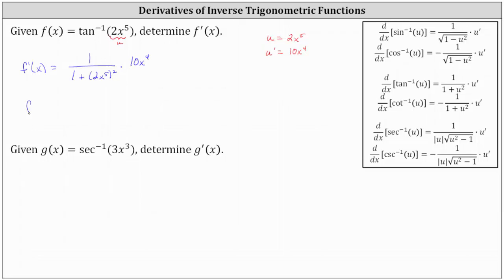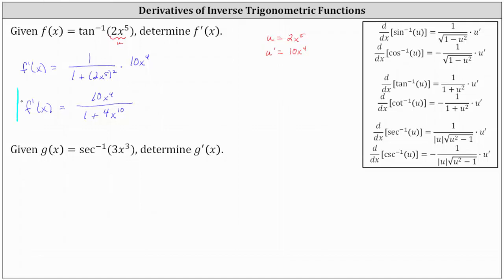Simplifying, we have f prime of x equals 10x to the fourth divided by the quantity one plus the square of 2x to the fifth, which is 4x to the tenth. Now we need to be careful here — we cannot simplify the 10x to the fourth and 4x to the tenth because we cannot simplify across addition. This is the derivative function.